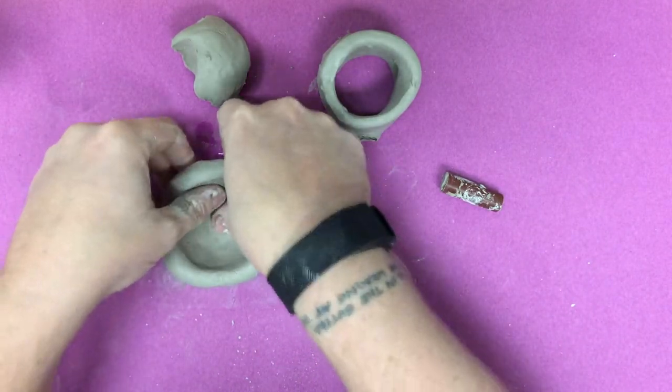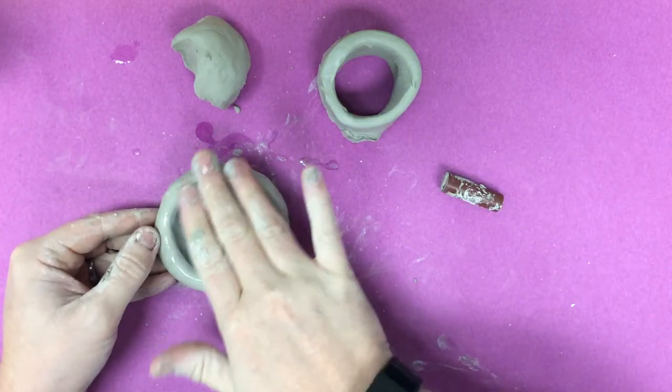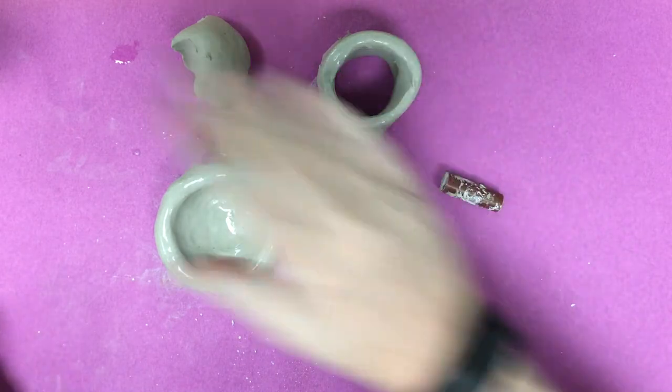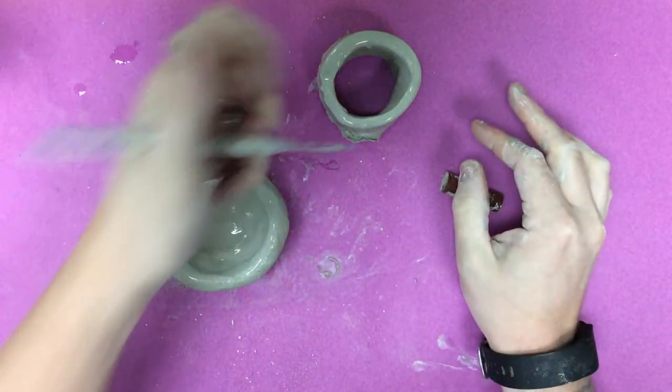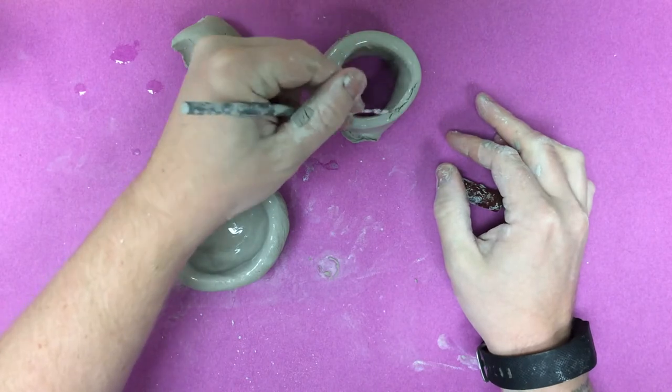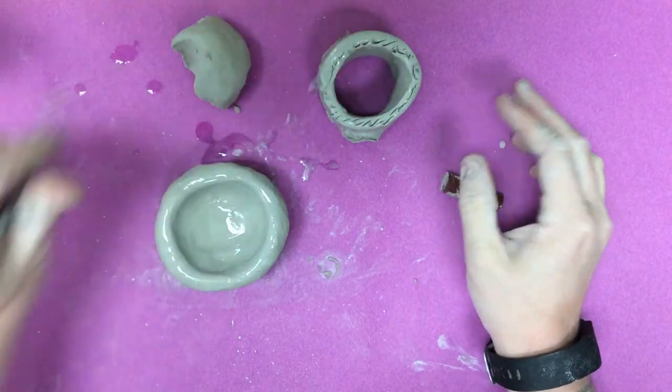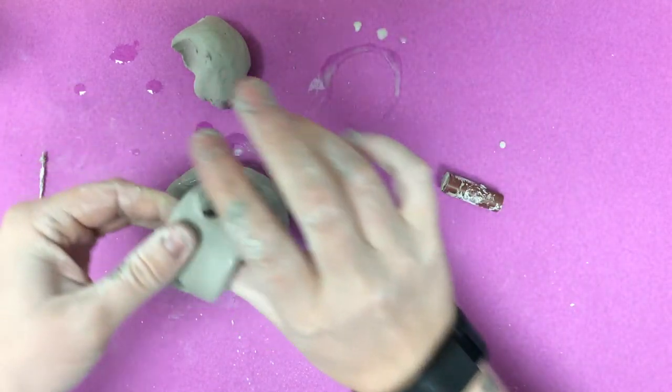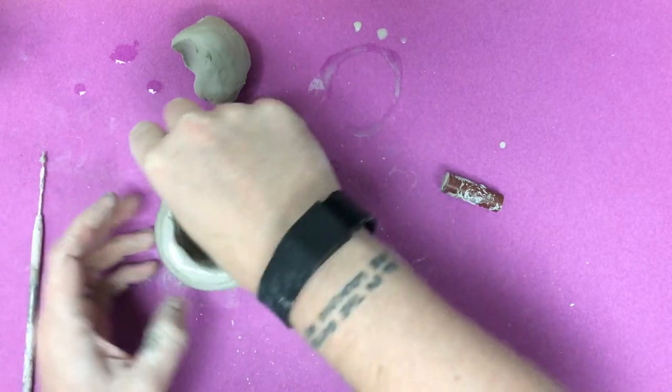Now to get these pieces attached, as usual I'm going to wet. I'm going to wet this top edge too. I'm going to scratch all along here, and I'm going to put that inside of the pinch pot.